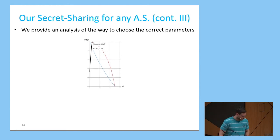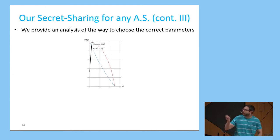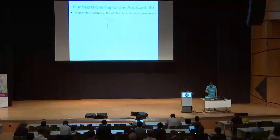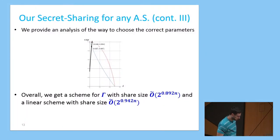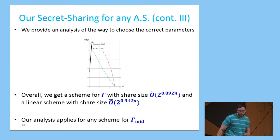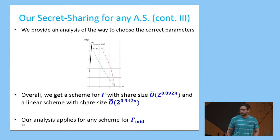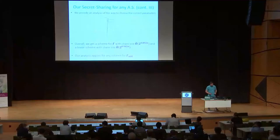We also analyzed how to choose the optimal parameter to get the optimal share size. In this figure you can see the optimal choice of the parameter. Overall, we get our scheme with share size O(2^{0.892N}) and a linear scheme with share size O(2^{0.942N}). Our analysis can be applied to any secret sharing scheme for gamma_mid, meaning any improvement to gamma_mid will lead to an improved secret sharing scheme for any access structure gamma using our schemes for gamma_top and gamma_bot.